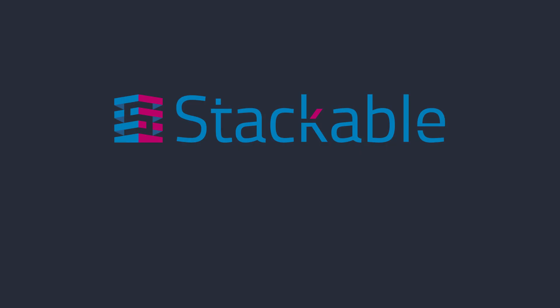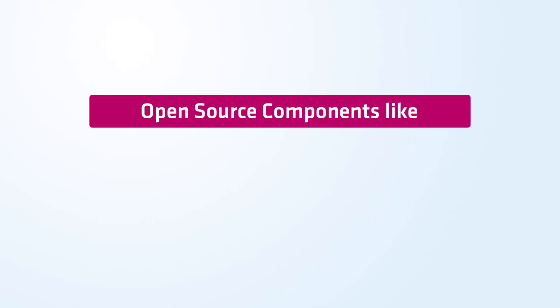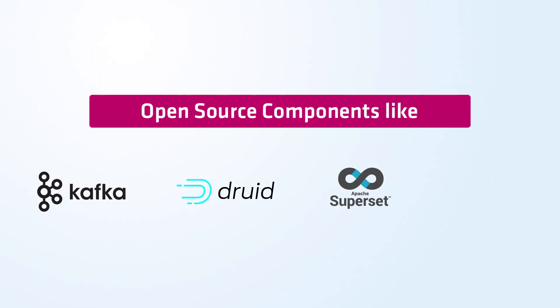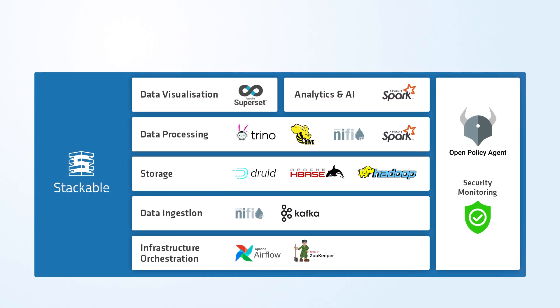The special thing about the Stackable data platform is that it's completely open source and everything is modular. We call this your data, your platform. For this purpose we have selected established open source components like Apache Kafka, Druid, or Trino. All parts can be individually installed and updated and are designed to work smoothly together.